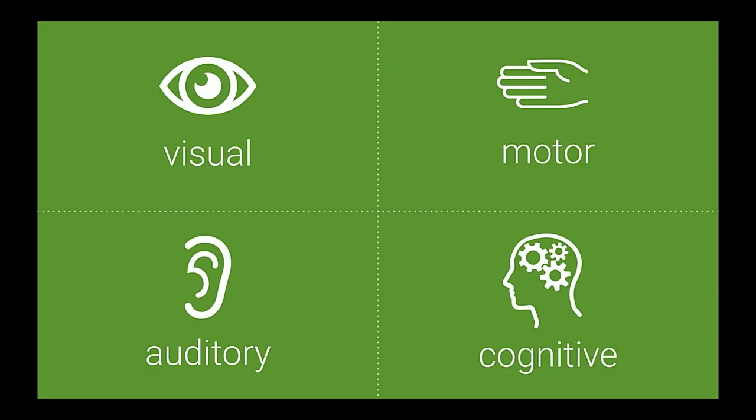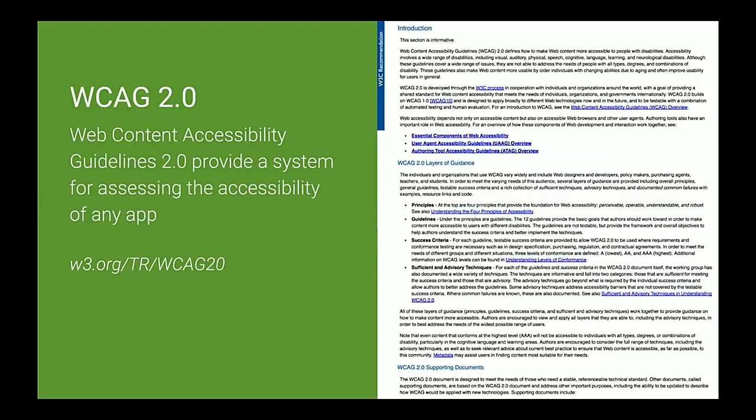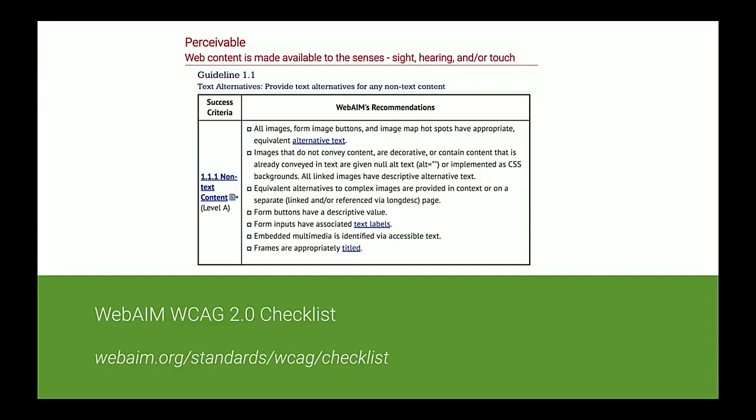These are the four major categories to keep in mind when thinking about accessibility in your applications. Because accessibility is so broad and the user base is so diverse, it's really helpful to have a guide. We find that in the form of the Web Content Accessibility Guidelines 2.0, or WCAG 2.0 — a set of best practices put together by accessibility experts to define what it means for something to be accessible. The WCAG is extremely comprehensive but can also be overwhelming. To help, the WebAIM group has distilled WCAG down into an easy-to-follow checklist called the WebAIM checklist for WCAG 2.0, which is specifically geared towards web content.